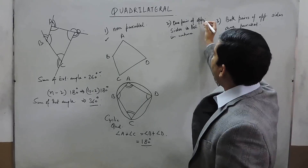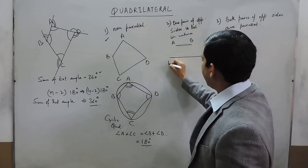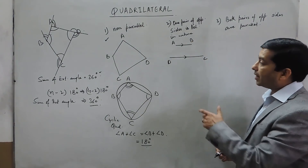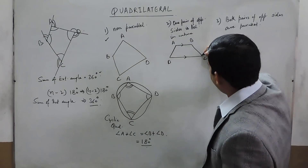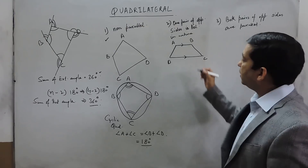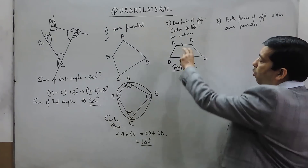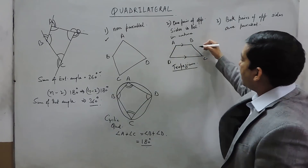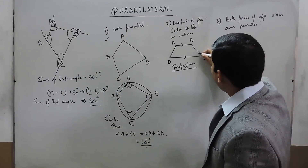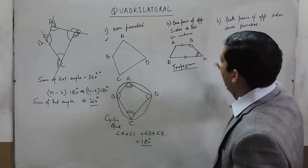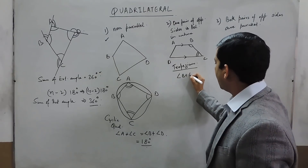The second classification is where one pair of opposite sides is parallel. There is a line AB and a line CD, where AB is parallel to CD but they are not equal in length. There can be another line AD and a line BC which are non-parallel. This figure is known as a trapezium, where only one pair of opposite sides is parallel. A property here is that the sum of adjacent angles on the parallel sides — like angle B plus angle C — must be 180 degrees.